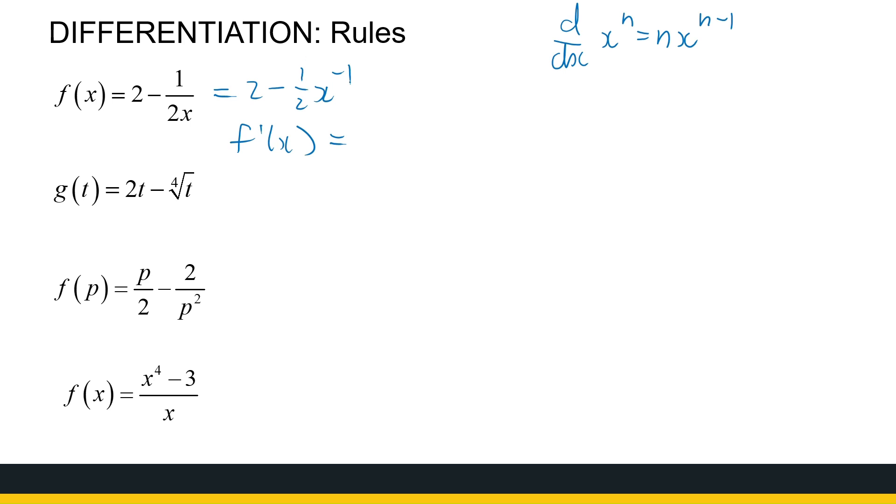Now I've got a half minus 1 times minus 1 half, so I've got a half x to the power, what do I do with my exponent? I subtract 1 from it, so it's minus 2. So that's the derivative of my function. Now you can rewrite it as 1 over 2x squared. You don't necessarily have to, it depends how you prefer your answers written.